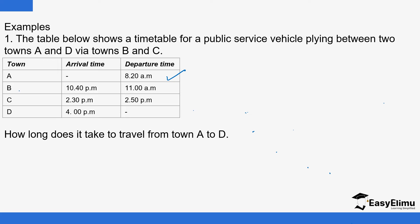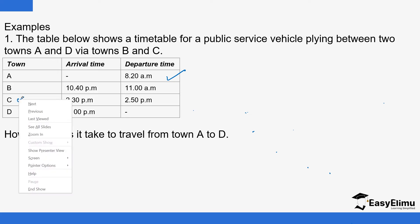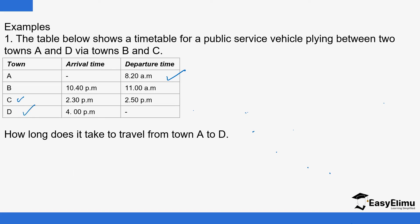The bus would move from A to B, stop for a while, continue the journey to C, stop for a while, then continue to D. This is a journey starting from A where town D is the final destination. You'd want to know at what time this vehicle is leaving town A and at what time it will be arriving at town D, passing through B and C.